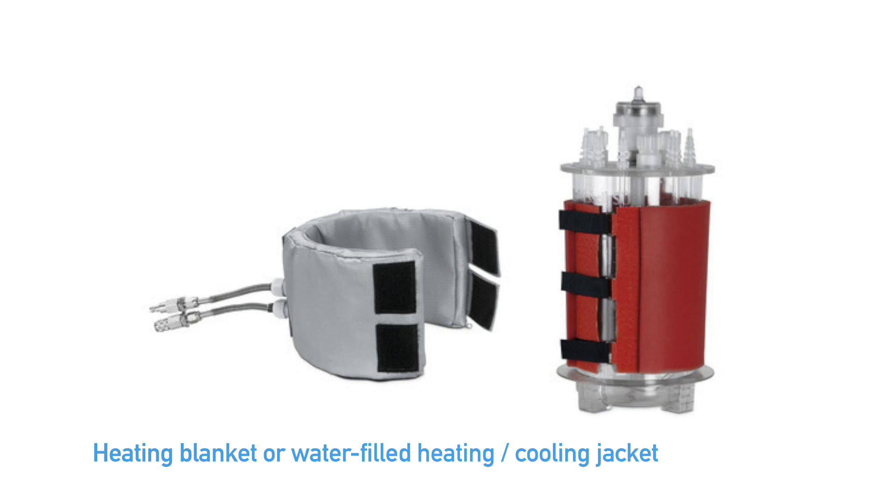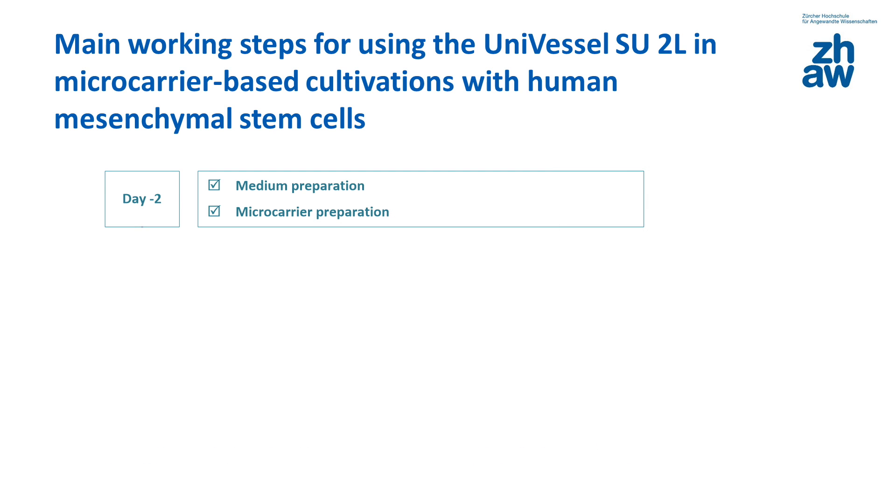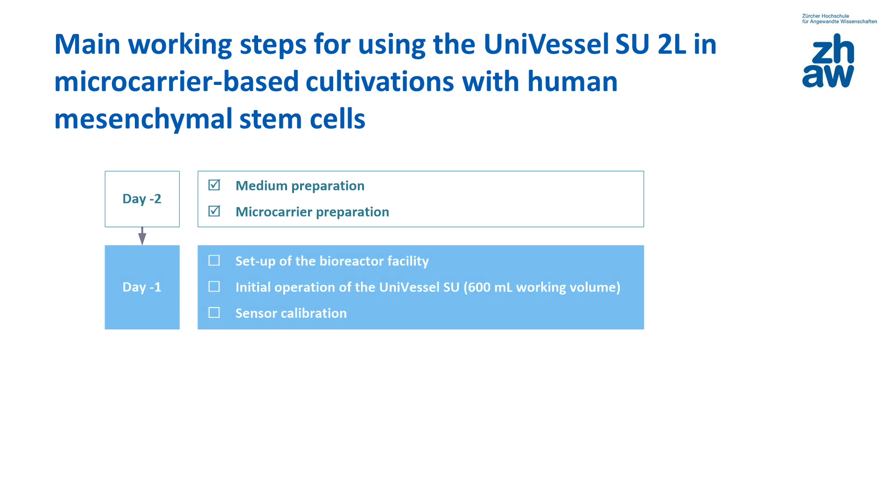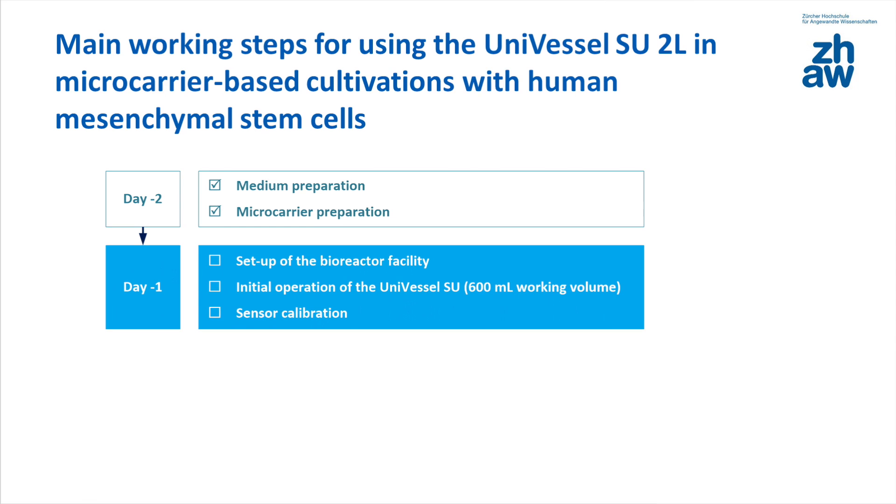With respect to temperature control, the vessel has a thermowell for the temperature sensor and either a heating blanket or a water-filled heating and cooling jacket. The microcarriers and medium need to be prepared before cultivation, as well as the Univessel SU. To ensure proper sensor function, it is recommended that bioreactor preparation is started the day before inoculation begins.